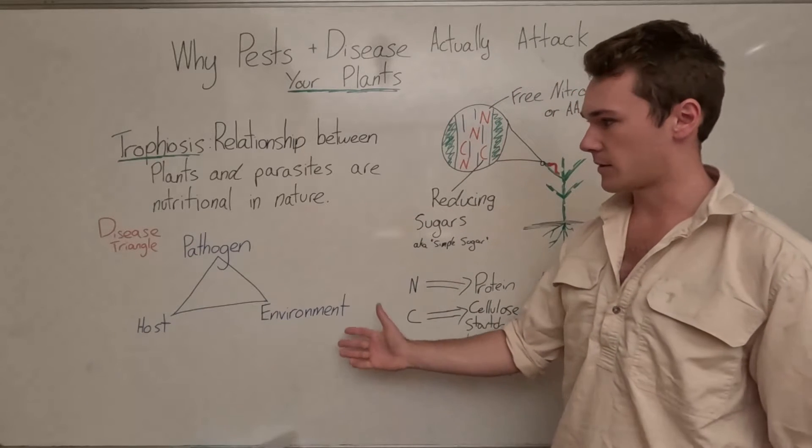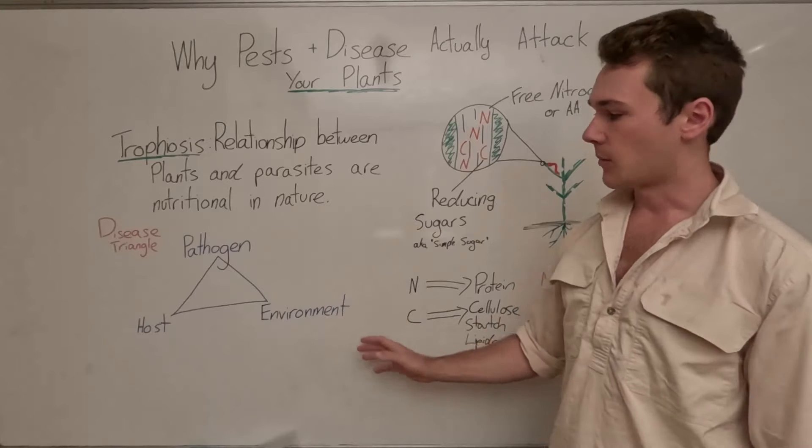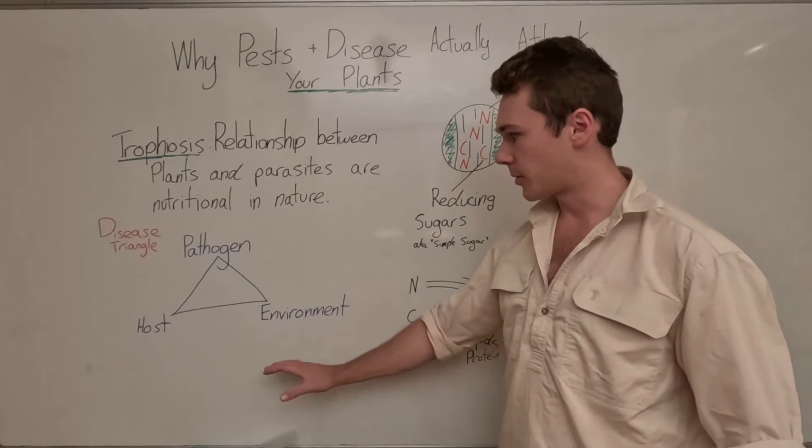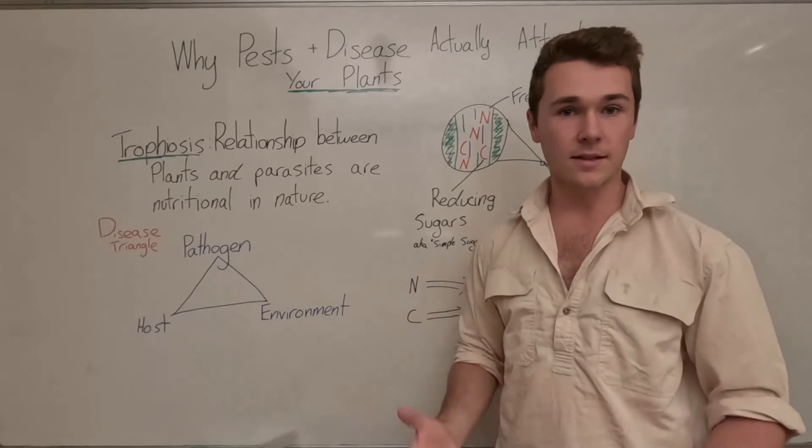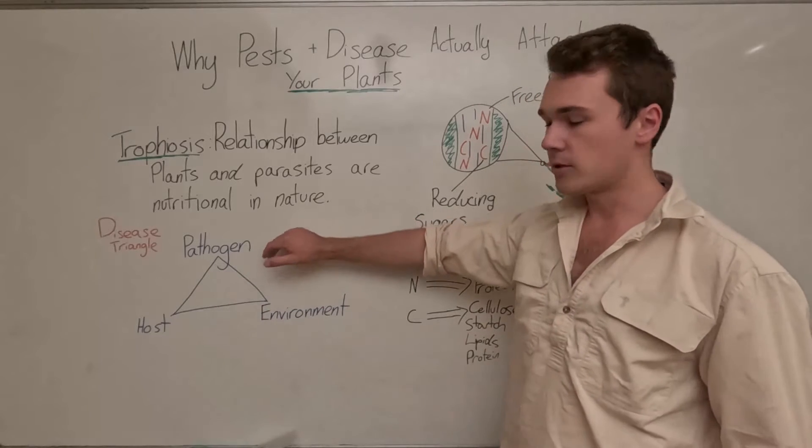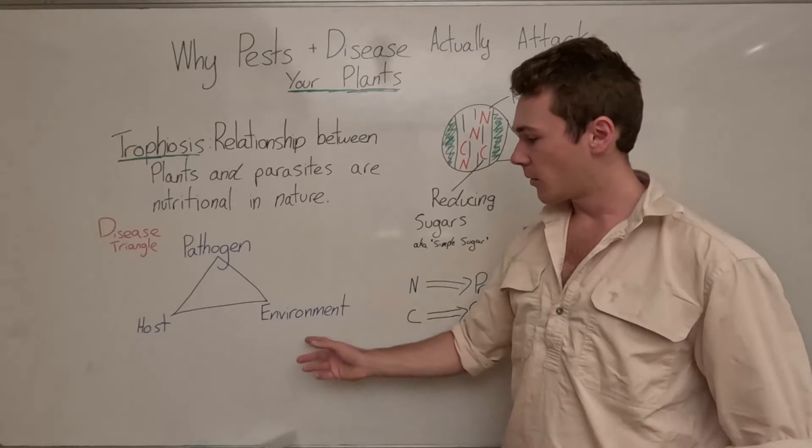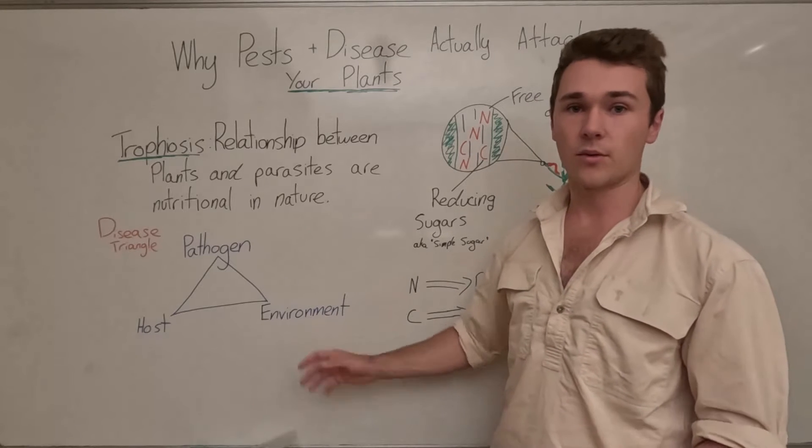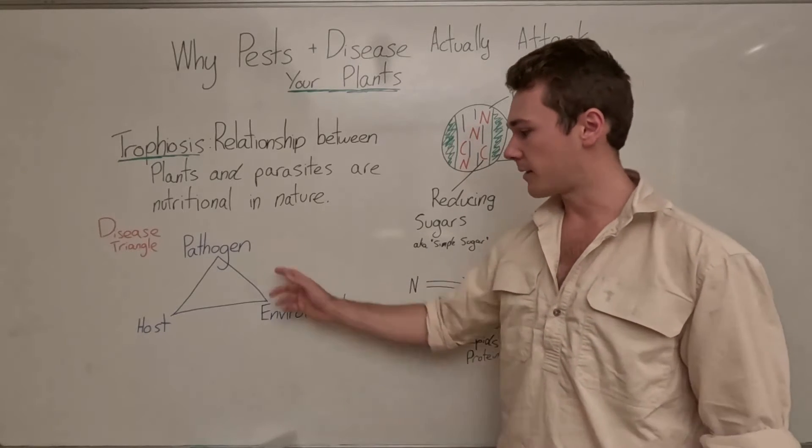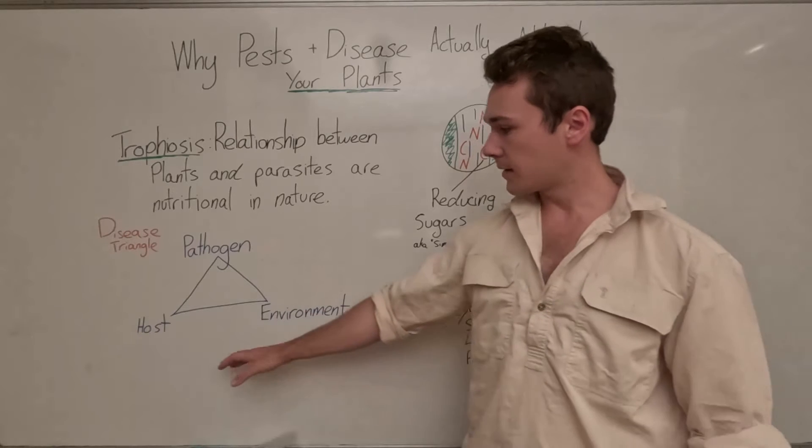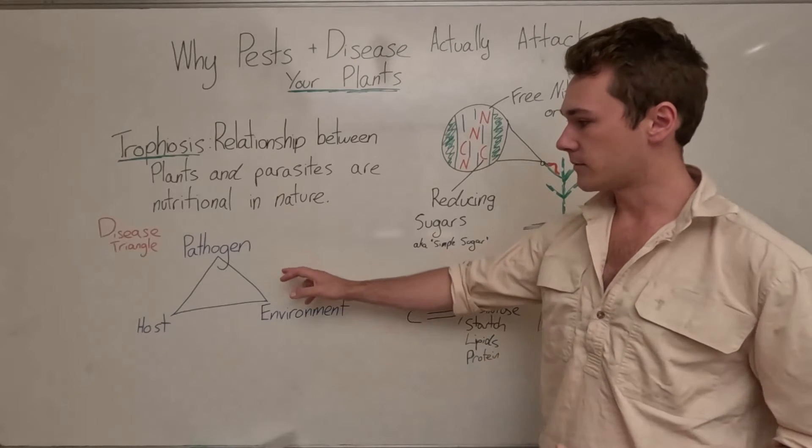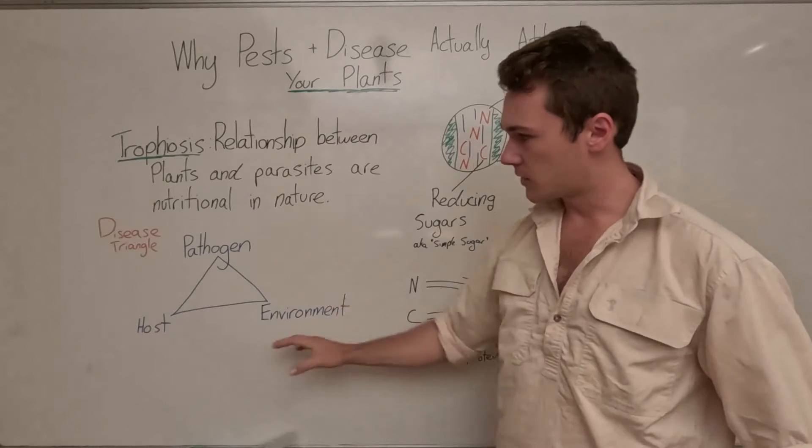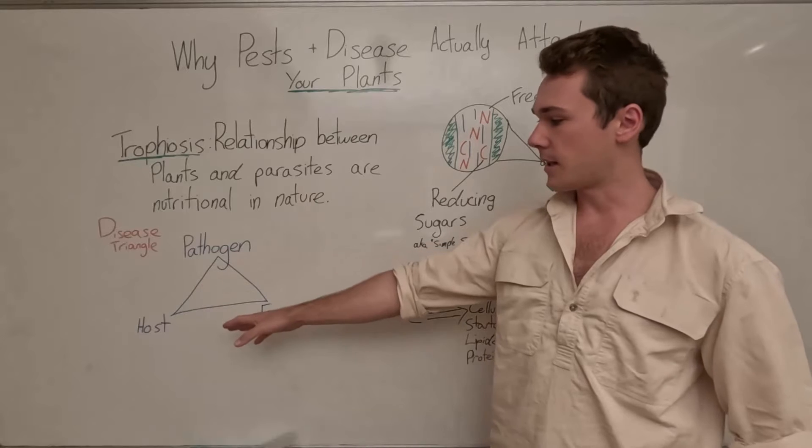And so when we think of the disease triangle, something that we learn in pretty early grades of agriculture, there's three things required for a disease to take. The first is a pathogen, so we need a suitable pathogen. Next is a suitable environment or favorable environment for that pathogen to grow in. And lastly, we need a suitable host or a host that is susceptible to the pathogen. If we have all those things, then a disease will take place in our plant.